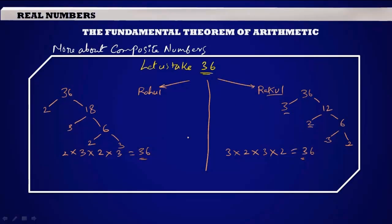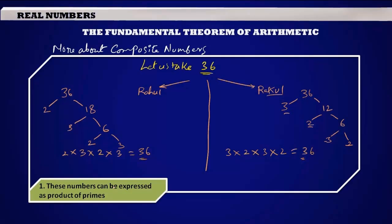Now let us make a note of our observations from this example. The first thing that we observe: every composite number is a product of the primes. 36 is a composite number that can be expressed as a product of the primes 2, 3, 2, 3.